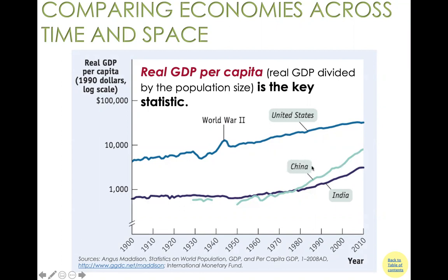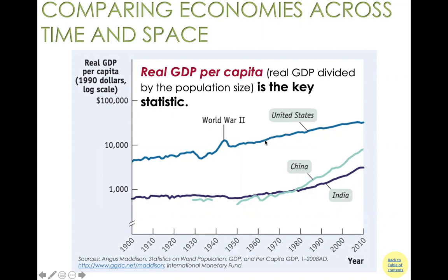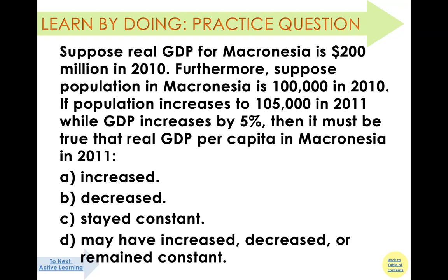We want to put US growth in a bigger context by comparing our experience with two other countries: China and India. Over the long run, things can change both within one country and across countries. You can see that both China and India are catching up with the United States — the gap is starting to narrow, but the experience and pace are different. This raises two questions: what explains the gap between the United States and the rest of the world, and what explains the narrowing of that gap?